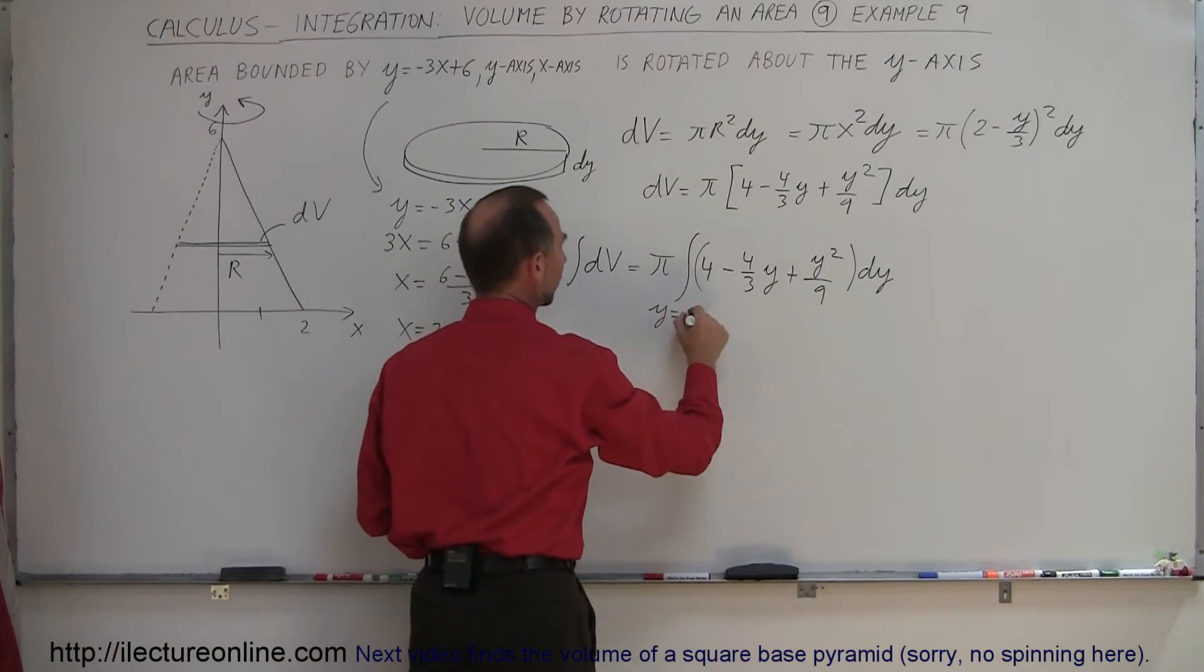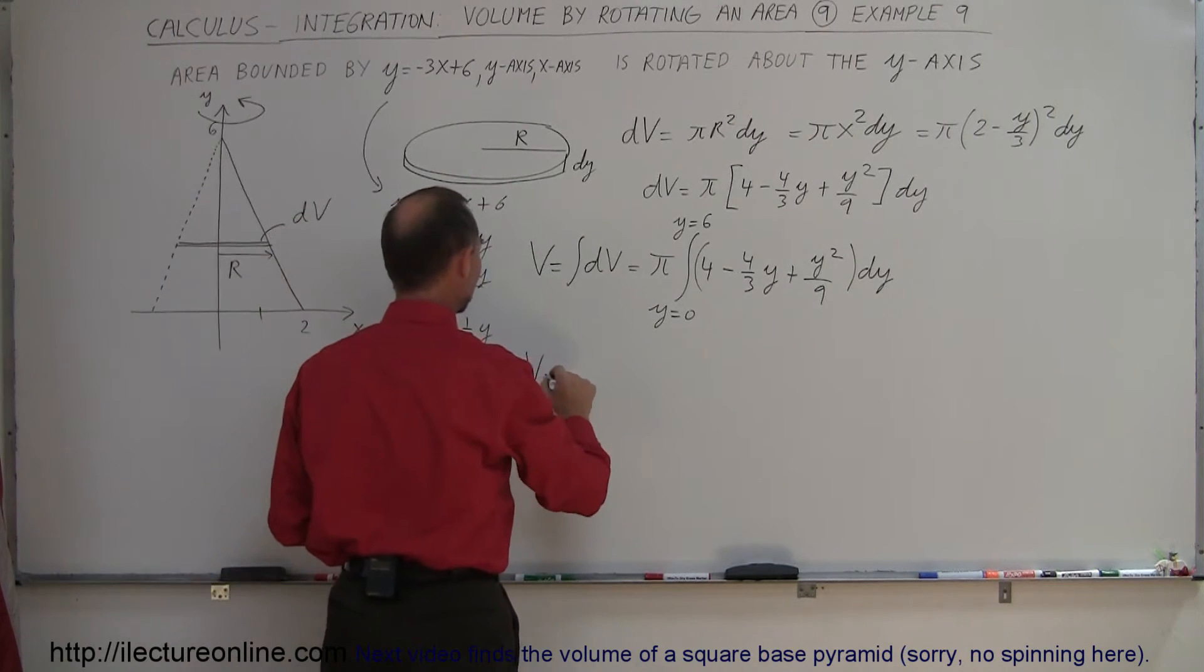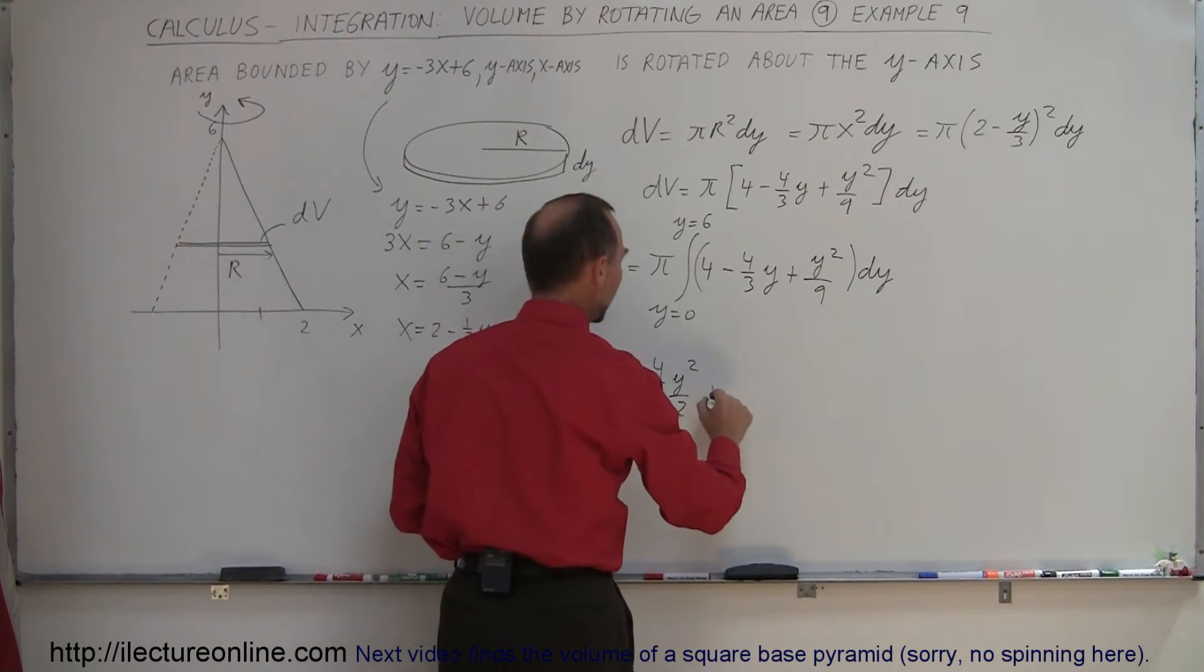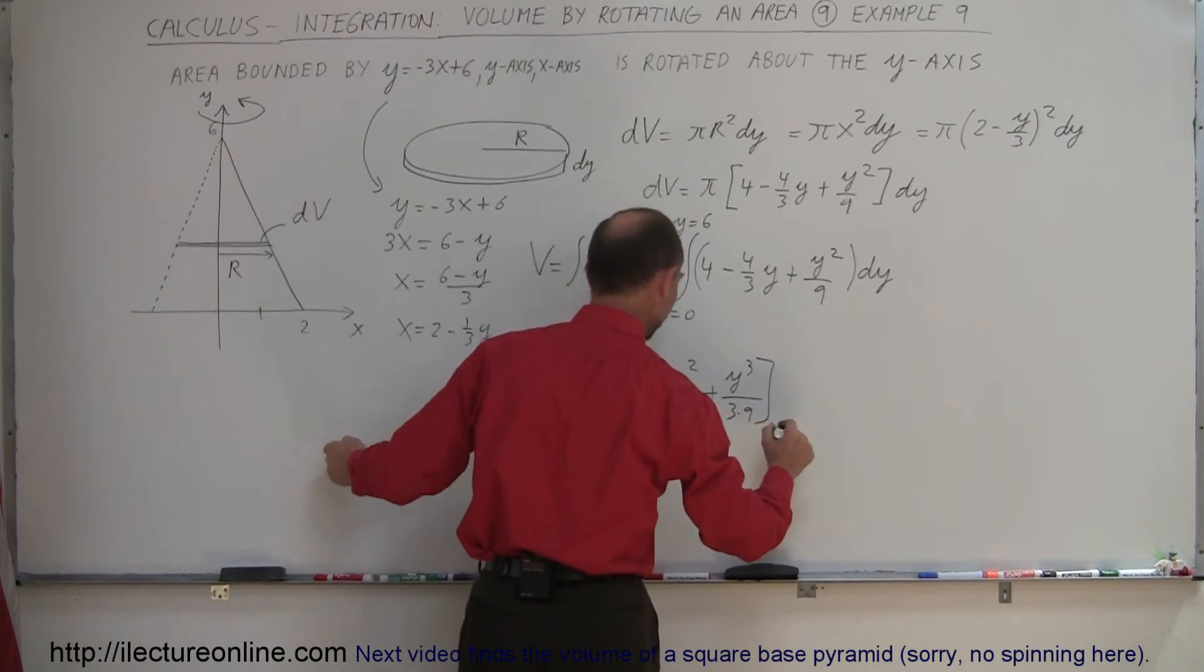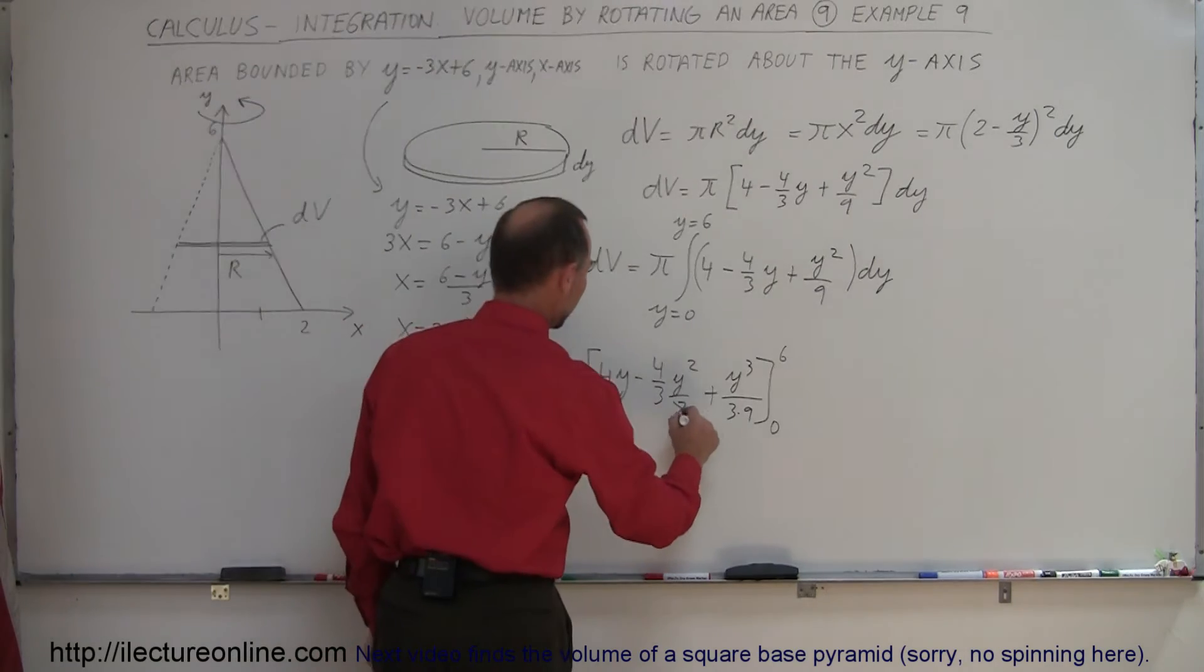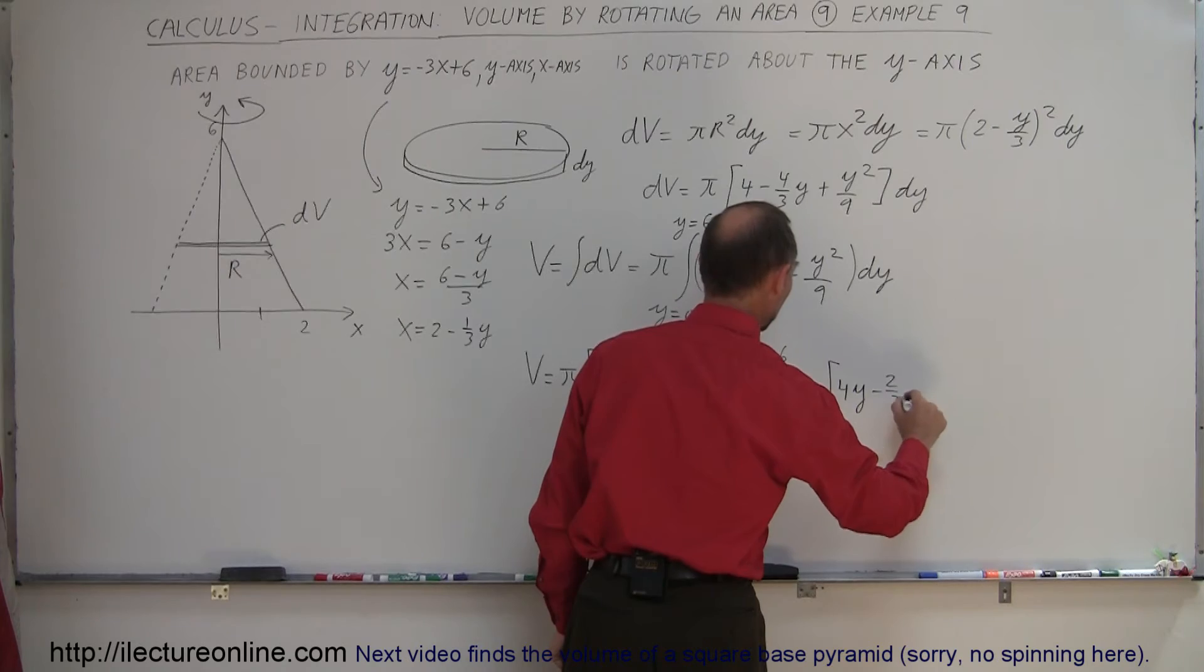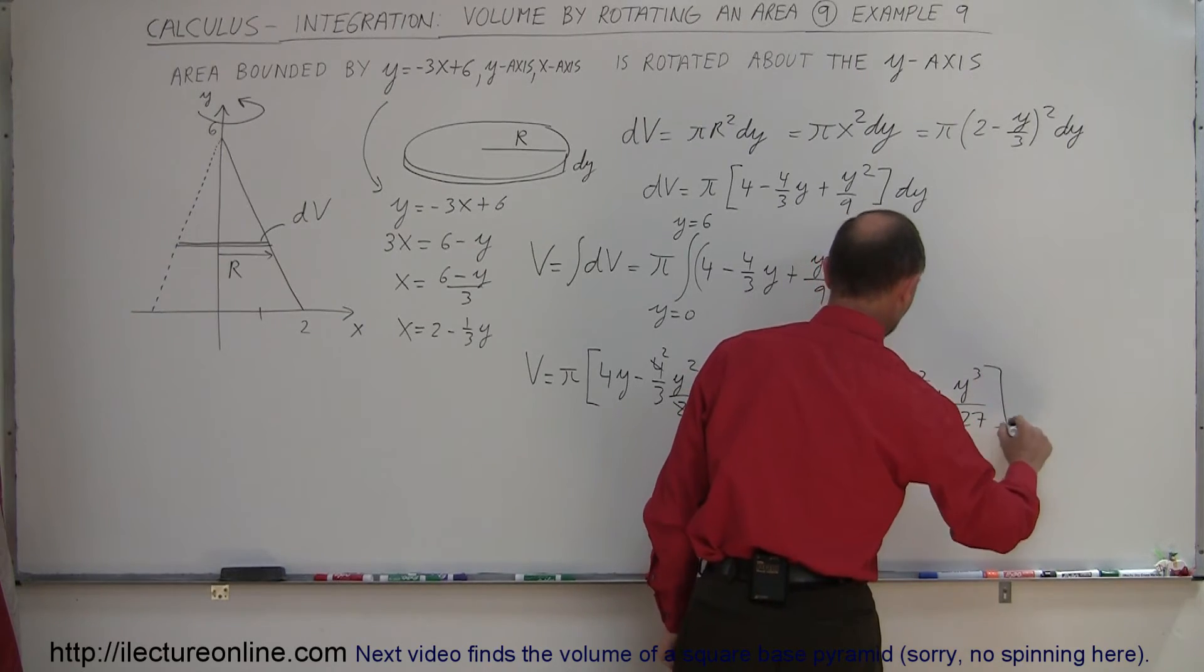So our limits are y equals 0 to y equals 6. Now go ahead and do that integral, that's a fairly easy integral to do. So volume is equal to π times 4y minus 4 thirds y squared over 2, add one to the exponent, divide by the new exponent, plus y cubed over 3 times 9. And so the integrals, the limits are from 0 to 6. I think I want to simplify that just a little bit more. So this 2 cancels out with that 4. And so let's write this as π times 4y minus 2 thirds y squared and plus y cubed over 27 from 0 to 6.